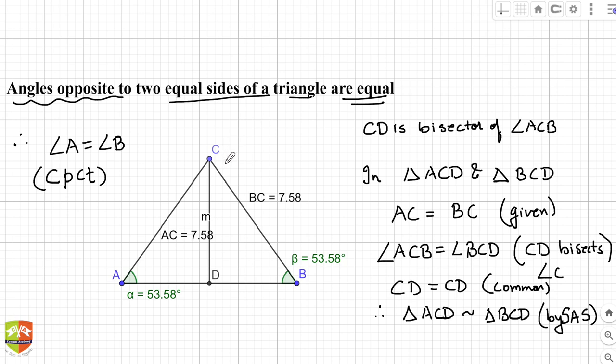In fact, the converse is also true. If the angles are equal, then the opposite sides also are equal. Once again, if two angles of a triangle are equal, then opposite sides of the two angles are also equal. I hope you understood this theorem. Let's now solve some problems based on this theorem.